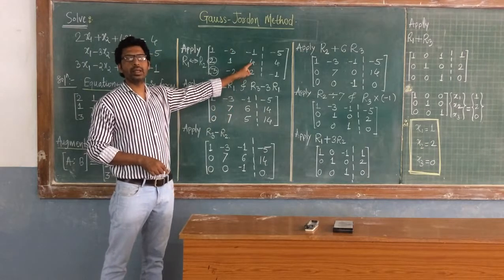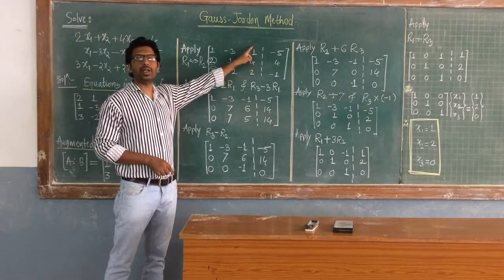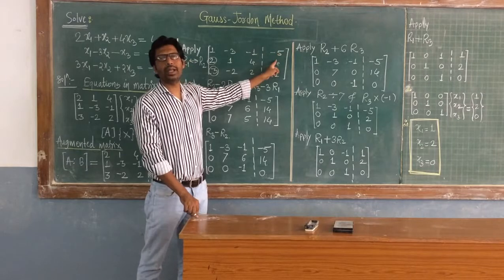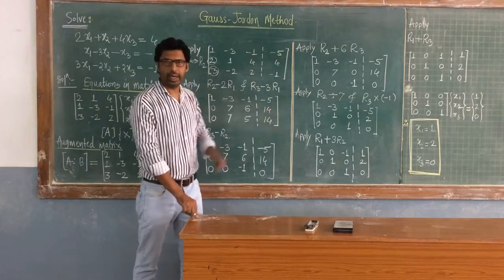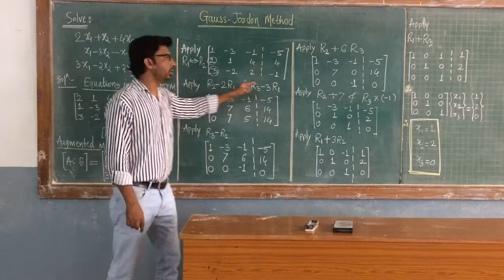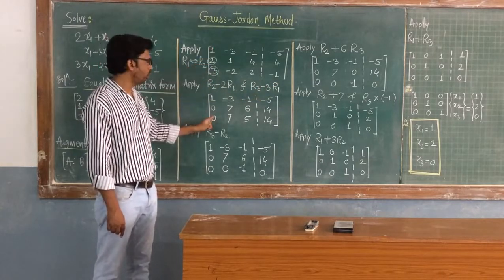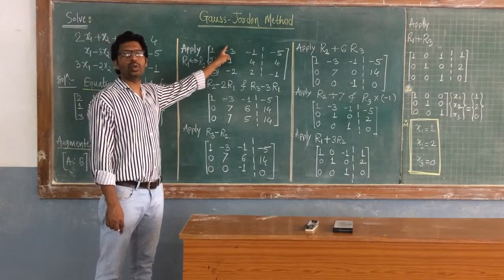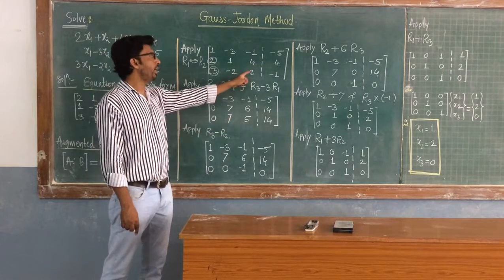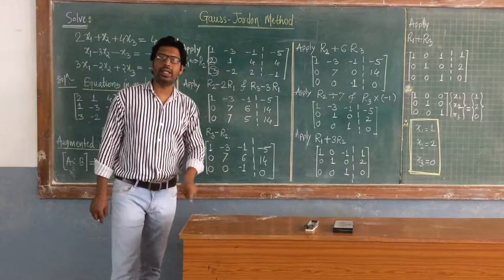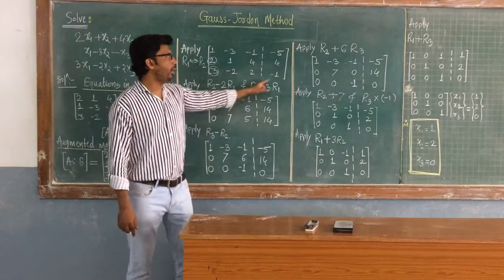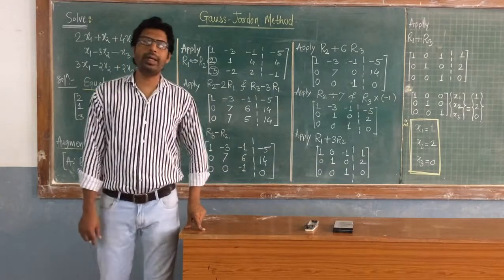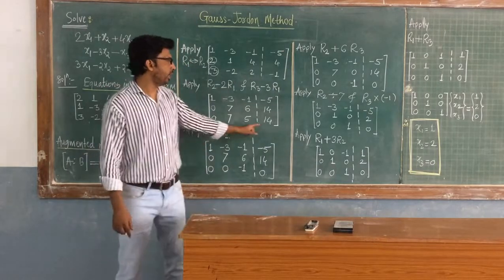Continuing R2 - 2R1: 4 - (-1)×2 = 4 + 2 = 6; and the RHS gives -5 - (-5)×2... giving 14. For R3 - 3R1: 3 - 1×3 = 0; then -2 - (-3)×3 = -2 + 9 = 7; then 2 - (-1)×3 = 2 + 3 = 5; and the RHS gives -1 - (5)×3... -1 + 15 = 14.